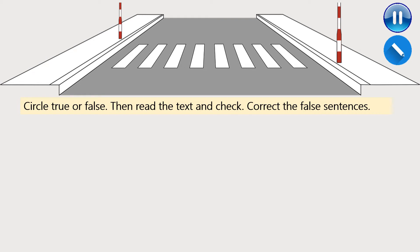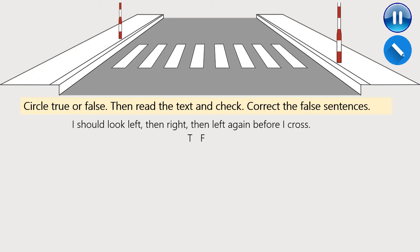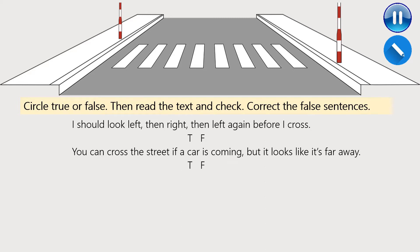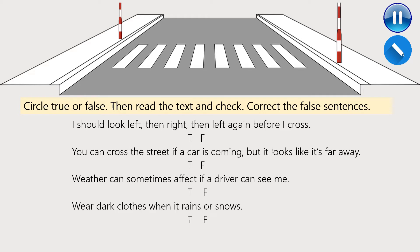Children, please pause the video lesson. Open your notebooks. I would like you to copy the following sentences and circle true or false. Then read the text and check your answers. Don't forget to correct the false sentences. Number one: I should look left, then right, then left again before I cross. Number two: You can cross the street if a car is coming but it looks like it's far away. Number three: Weather can sometimes affect if a driver can see me. And number four: Wear dark clothes when it rains or snows.